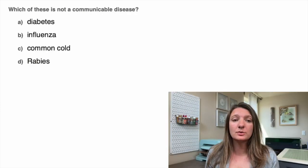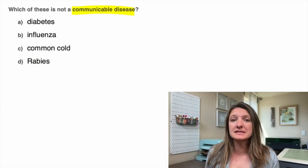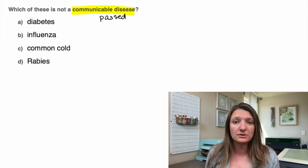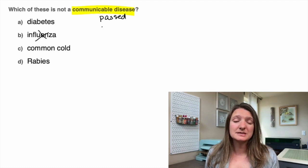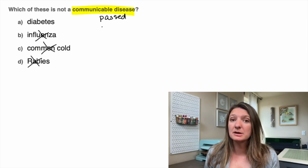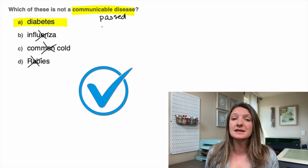Question three: which of these is not a communicable disease? A communicable disease is any disease that can be passed, whether it's person to person or animal to person. Influenza can be passed person to person, same with the common cold, and rabies can be passed animal to person. So the only non-communicable disease is diabetes. That's our answer.